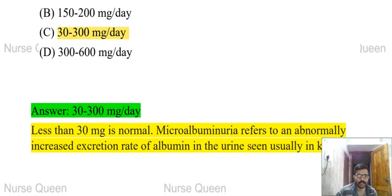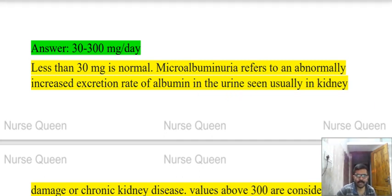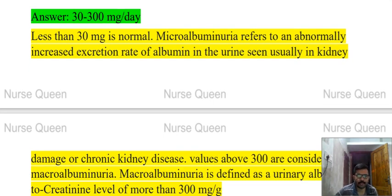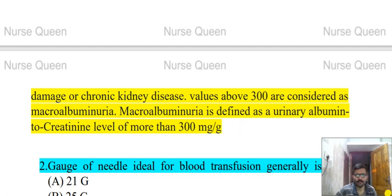Answer and explanation: 30 to 300 mg per day. Less than 30 mg is normal. So albumin less than 30 mg is normal, and microalbuminuria is called microalbuminuria by the American kidney disease classification. Albumin is defined as urinary albumin to creatinine level of more than 300 mg.